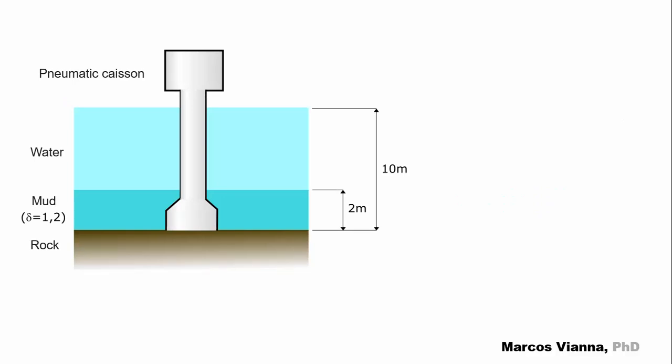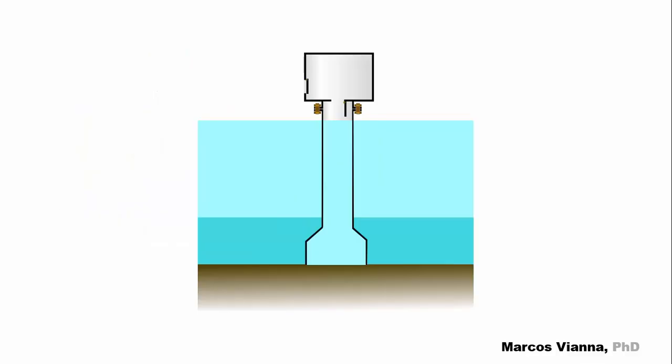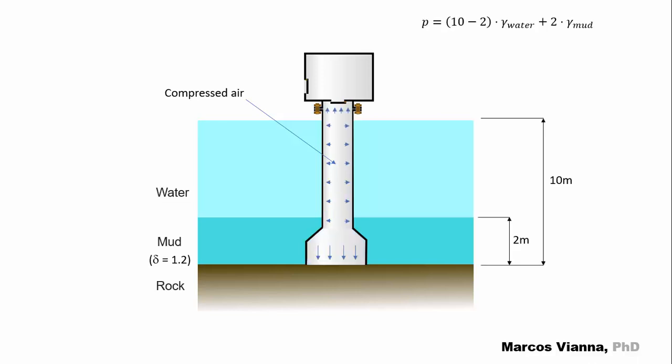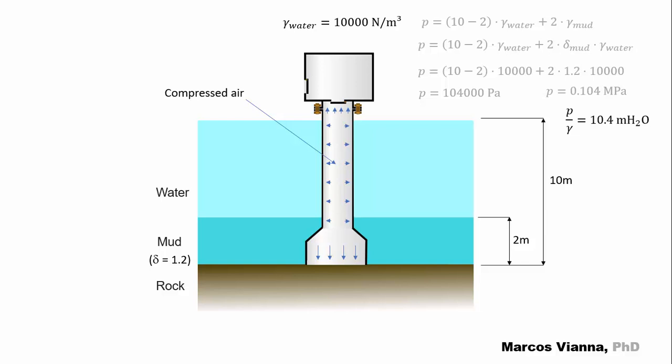One more! The last one! The figure shows a pneumatic caisson installed in a river. What will be the pressure inside it that will keep it dry for the excavation work? But, first, let's explain how it works. Here it is inside the river. We'll use it to excavate the bottom of the river, where we'll make the foundation of a bridge. So, we'll fill it with compressed air. To ensure that the column will be dry, this is the pressure that we'll need, which we can write like this. As we know the specific weight of the water, we can substitute the values and find the pressure in pascals, or in megapascals, or the equivalent pressure height in water meters.